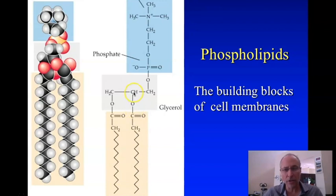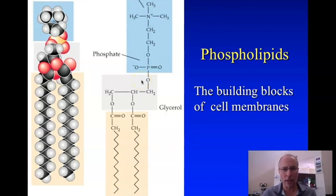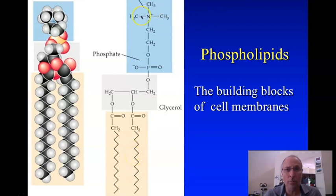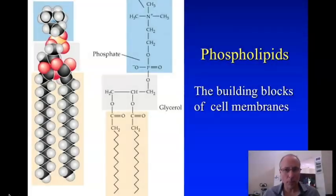These bonds connect this to the glycerol, and now we end up with this big molecule made of four different parts: the phosphate-choline head, the glycerol, and the two fatty acid tails. This is what makes it amphipathic: the fatty acids are not soluble in water, but the choline phosphate is. That sets up the membrane.